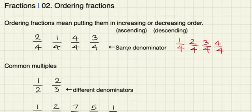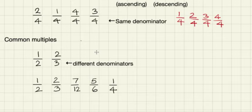However, it's quite rare when you're ordering fractions that they all have the same denominator. So what happens in the case of different denominators? That's what we're going to look at next. And for that, we need to use this term which is called a common multiple.